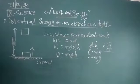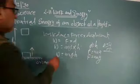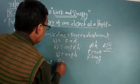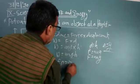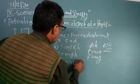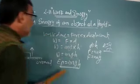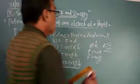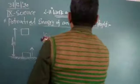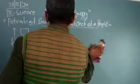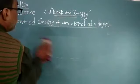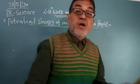This is known as the potential energy of the object. We write it as EP = mgh. So the potential energy of an object at a certain height is given by the formula EP = mgh.